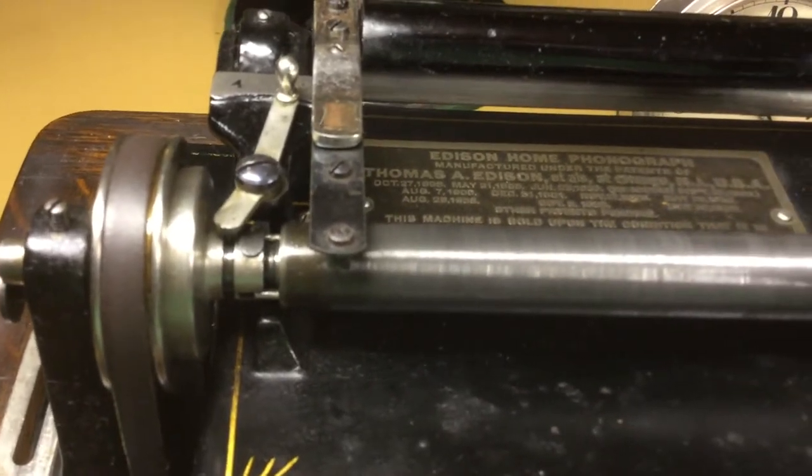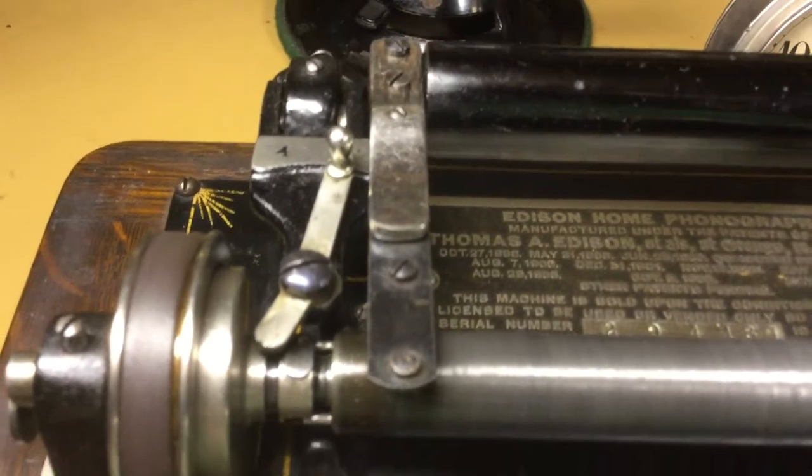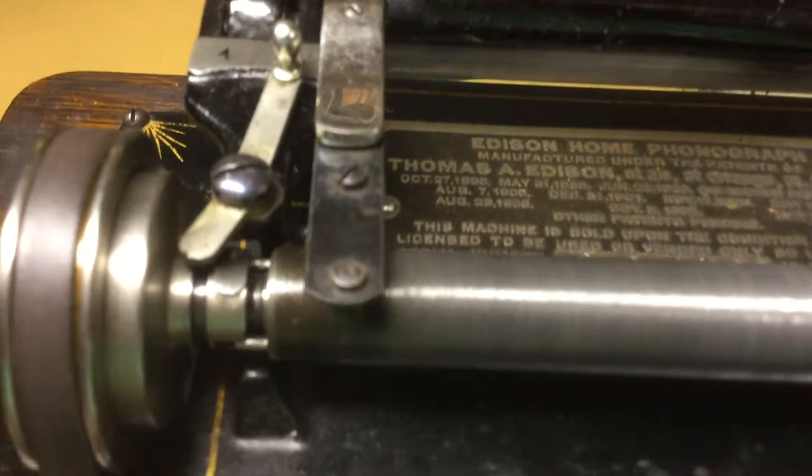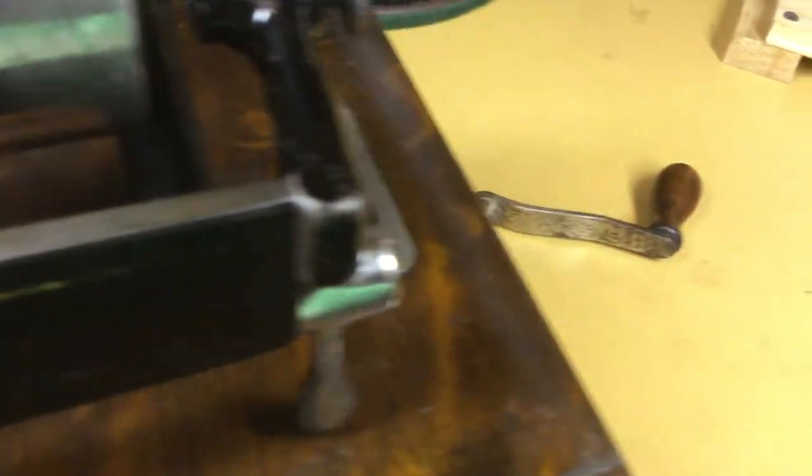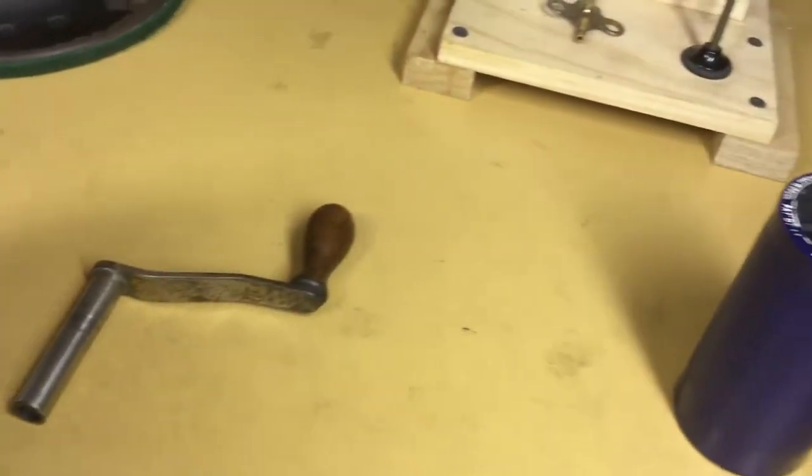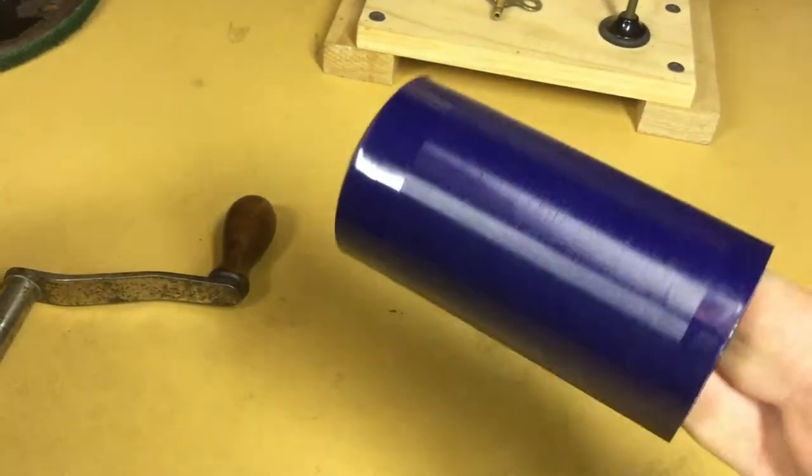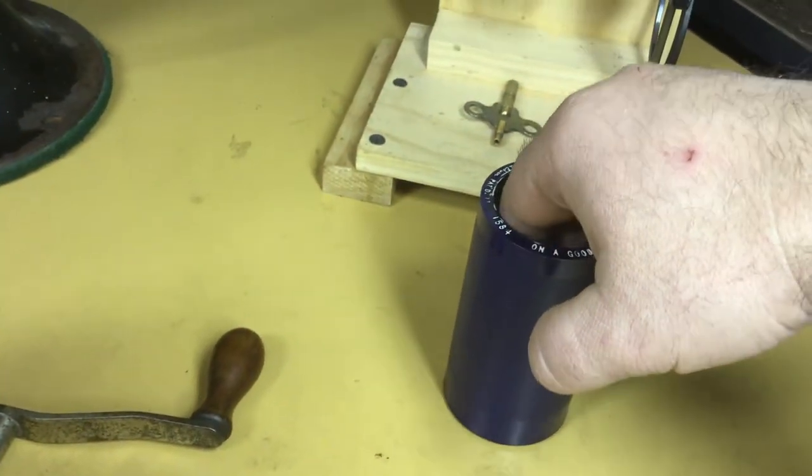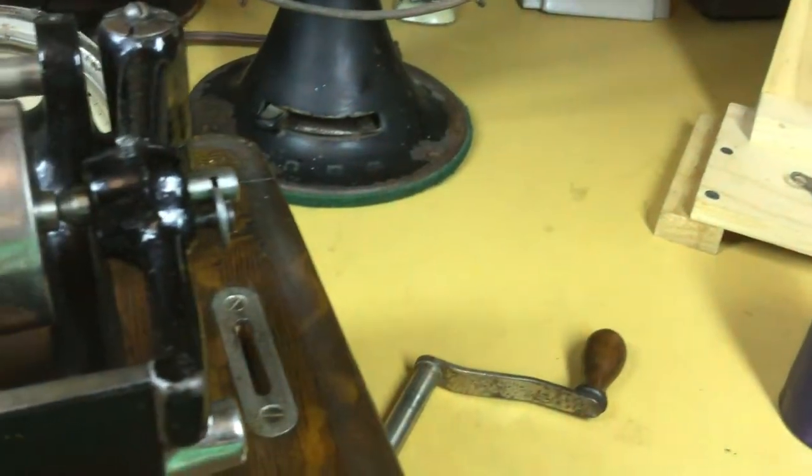The earlier model A machines have a speed control knob that sticks out on the bed plate because they were made for playing both the gold molded and the brown wax records, and those all run at different speeds. Usually the brown wax records run at a slower speed.